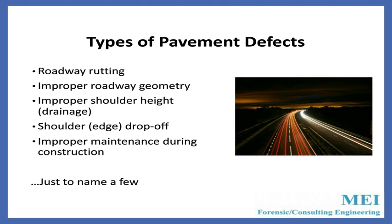Types of pavement defects: you have roadway rutting, which can cause hydroplaning. You have improper roadway geometry — for example, the curvature of the road may not be proper, including both horizontal and vertical curvature. You might have an improper shoulder height. Heights of roads change when you add overlays, and the contractor must account for that — that's also where you have shoulder edge drop-off problems. And then there is improper maintenance during construction. Those are just a few of the types of pavement defects.